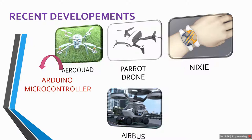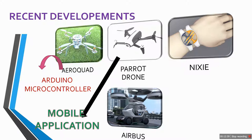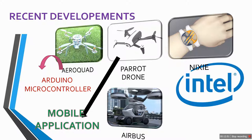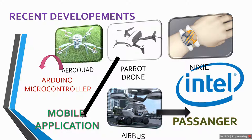The second is the Parrot Drone — a type of drone that runs via a mobile application, so coding can be used to guide its movement. The next is an Intel product being developed as a wristband that can also function as a quadcopter. The fourth is the Airbus — a quadcopter-type system used for passenger traveling.